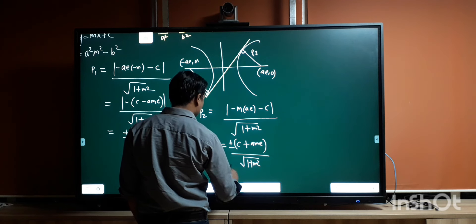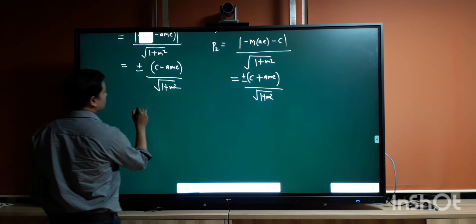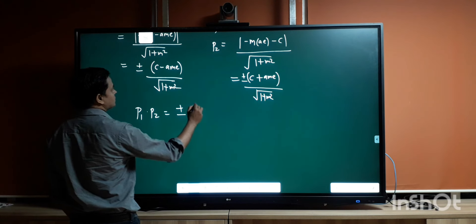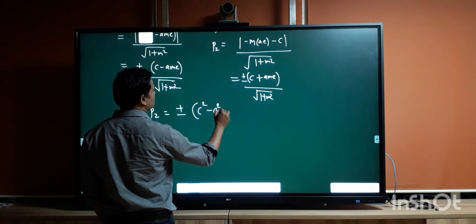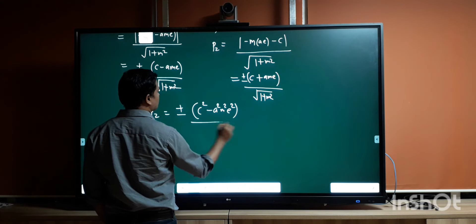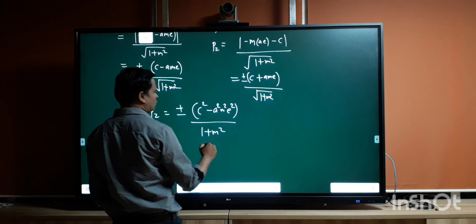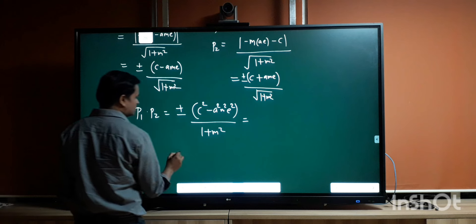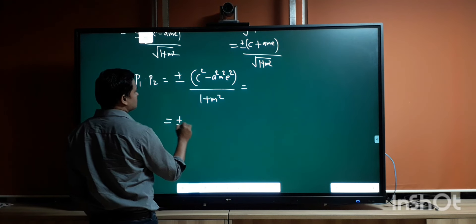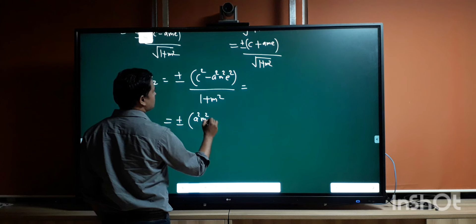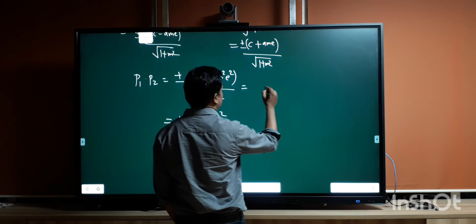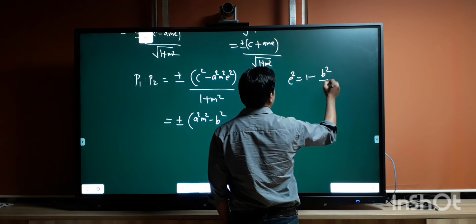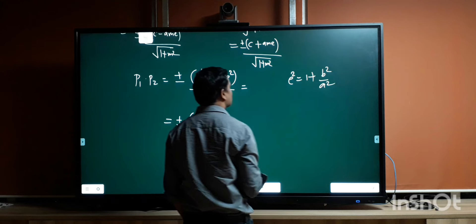If I multiply p1 into p2, I get ±(c² - a²m²e²) upon (1 + m²). Now, c² is nothing but ±(a²m² - b²) from the tangency condition, and e² = 1 + b²/a², so a²e² = a² + b².